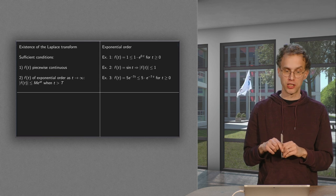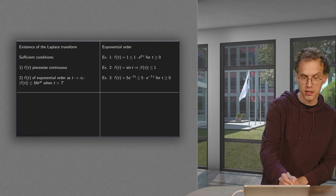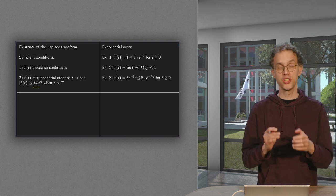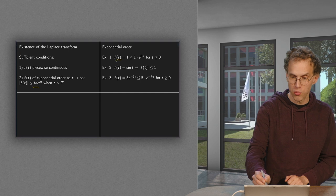Now about the exponential order. That means that your f has to be below some exponential function. Let's take a look at a few examples. For example, the function 1.